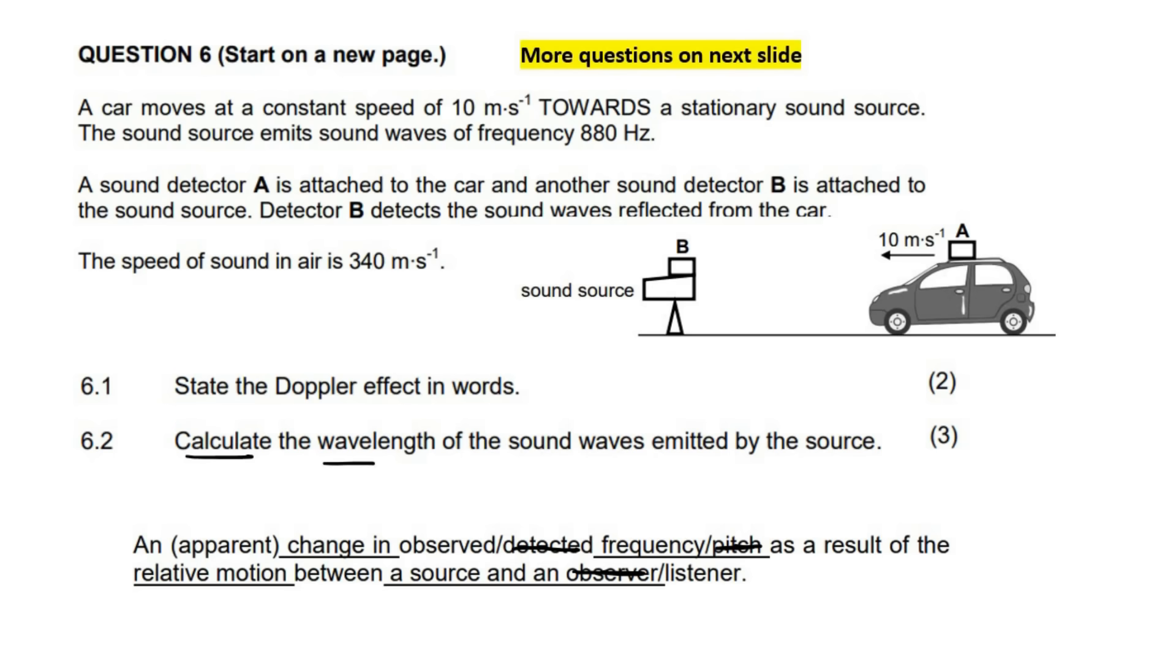The first question says, calculate the wavelength of the sound emitted by the source. We know that there is this formula that goes like this: V equals F lambda. It is on our formula sheet, where V is velocity, F is frequency, lambda is wavelength. We know that the speed of the waves coming from the source travel at 340, because sound travels at 340. We know that the frequency, the sound source emits a frequency of 880, and so we can work out wavelength.